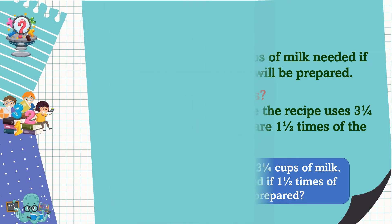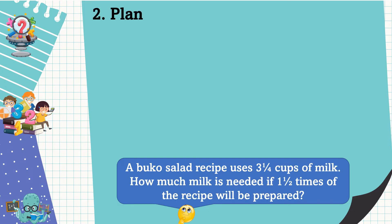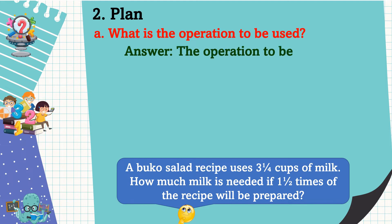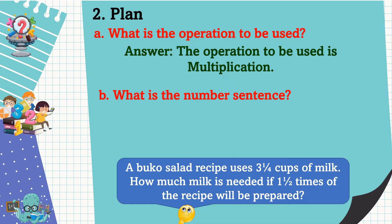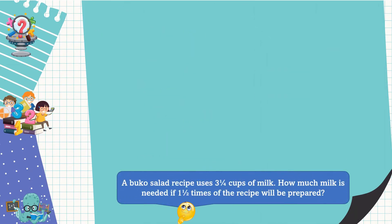The next step is to make a plan. Under planning, we consider what operation to use. The operation to be used is multiplication. What is the number sentence? Three and one-fourth times one and one-half is equal to n. Since we have already planned, let's solve the problem.